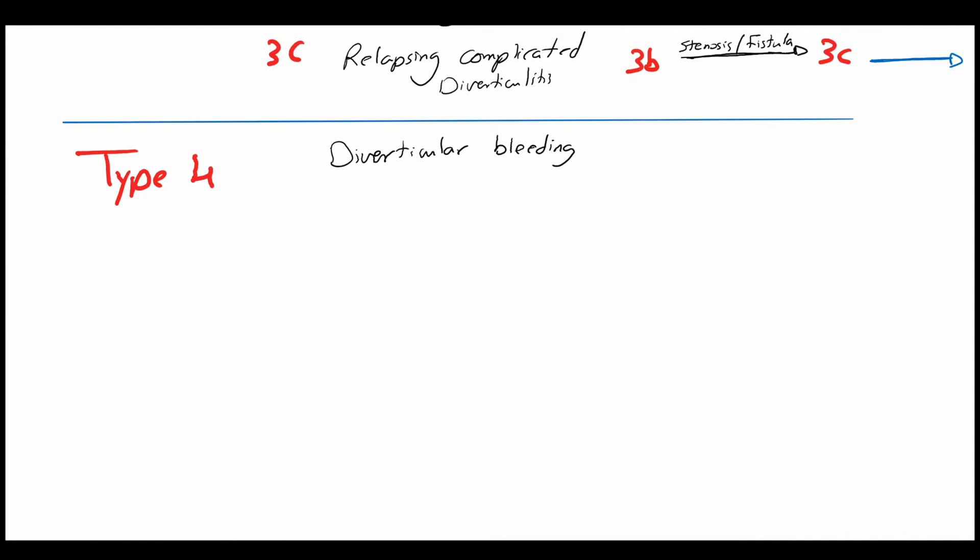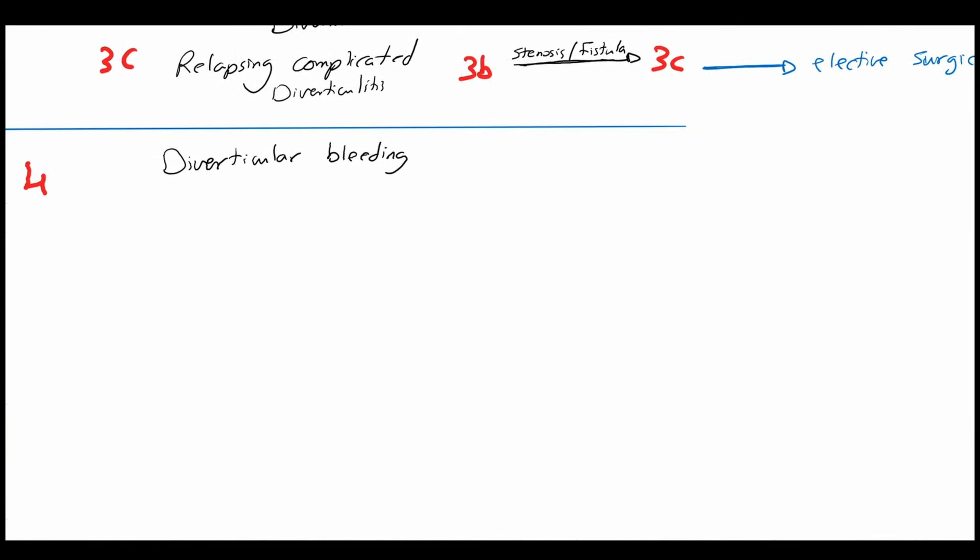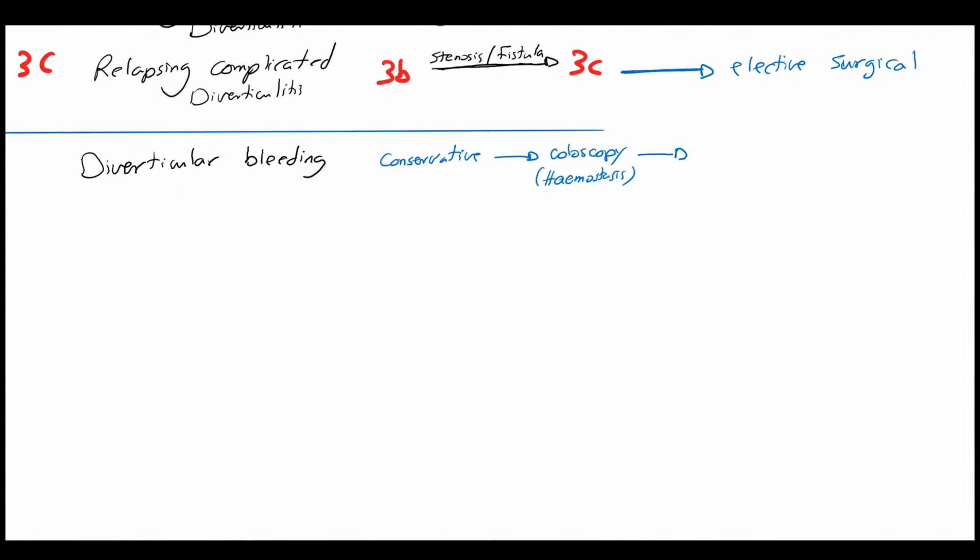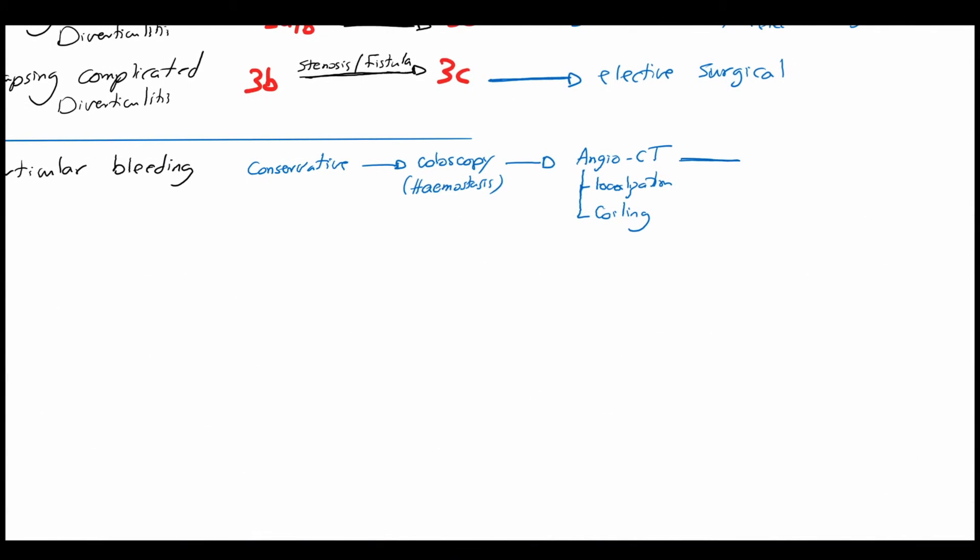At last, the stage 4 diverticular disease is diverticular bleeding. The treatment of choice is conservative treatment because most cases are self-limited bleeding. The second step can be a hemostasis trial with colonoscopy. If failed, a CT angiography is recommended to locate the bleeding and to attempt an interventional treatment with coiling of the feeding artery.